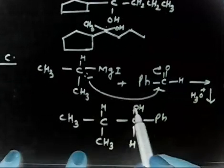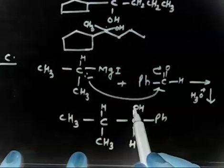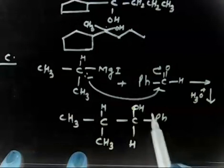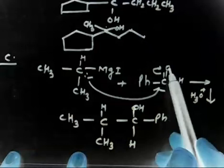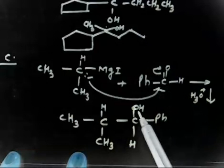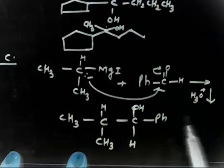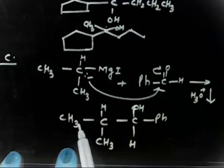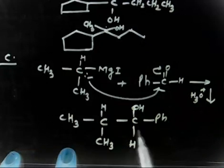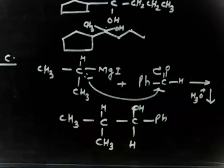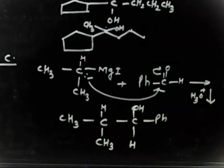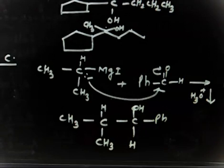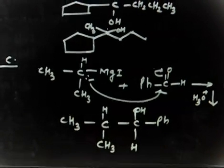The final product after hydrolysis has CH₃, a hydrogen, and an OH group — not Ph but OH, because O minus takes H⁺ to give OH. So the product is CH₃CH(OH)Ph — a secondary alcohol. I think all of you can write this one.